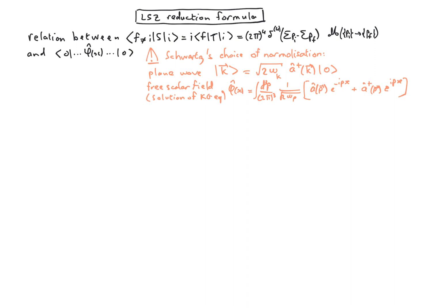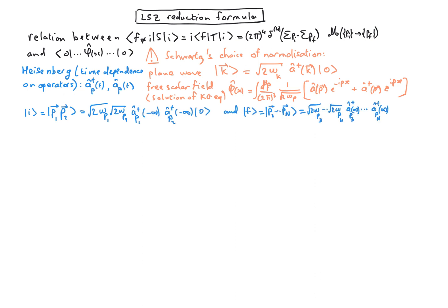So we can put the time dependence of the operators rather than on the state, that's called the Heisenberg representation, and we can then note the a dagger and a, the creation and annihilation operators, as time functions. With this notation, we can write our asymptotic initial and final states as plane waves. And we can then write the S-matrix element as...